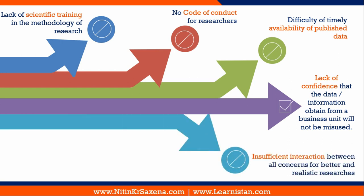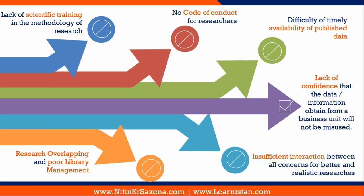Next is insufficient interaction between all concerned parties for better and realistic research. A researcher should be in constant touch with university people, with those who grant funds for research, and with key decision makers in industry and university for getting data or inputs. Because of insufficient interaction and lack of confidence between the different parties, there is difficulty in arriving at robust and clear research. And last is research overlapping and poor library management. Because of poor code of conduct and lack of scientific training, there are many instances of research overlap — where two or more researchers are doing almost the same type of study.